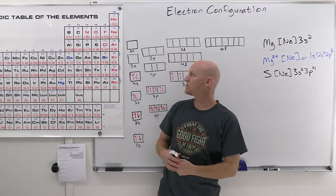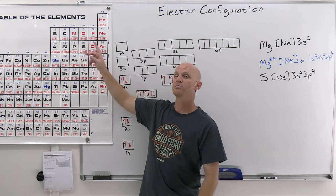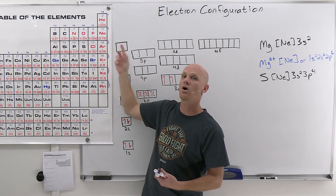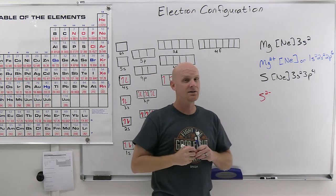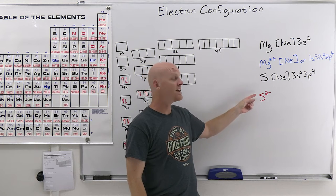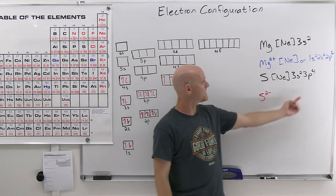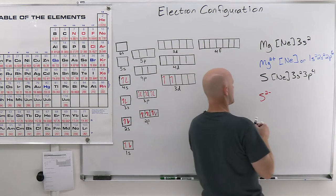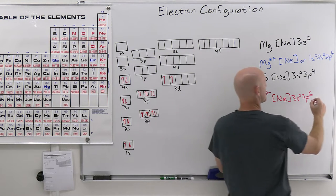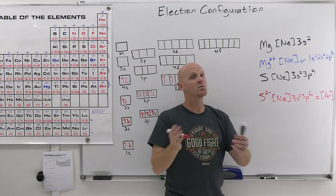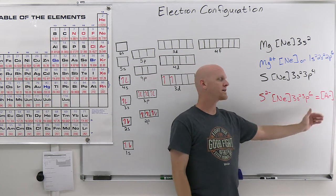Sulfur's noble gas configuration is [Ne] 3s² 3p⁴. As a nonmetal, sulfur typically forms an anion — in this case S²⁻ with a negative 2 charge, meaning it gains two additional electrons. A negative charge means additional electrons, so we fill them into the lowest energy openings, still following the Aufbau principle. The two openings are in the 3p orbital, giving [Ne] 3s² 3p⁶ — which is the same as argon. You can write this as [Ar] or as the full configuration 1s² 2s² 2p⁶ 3s² 3p⁶.